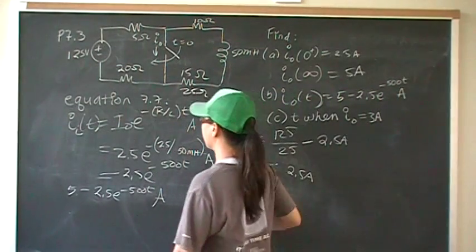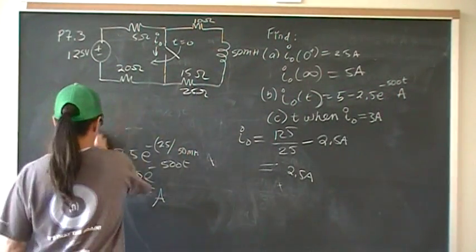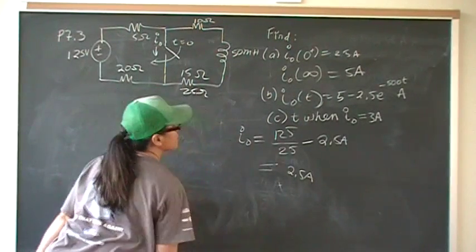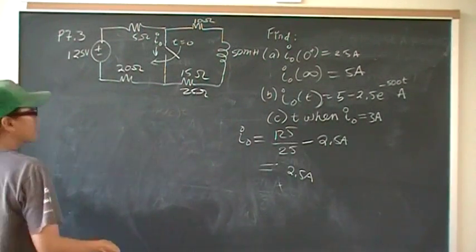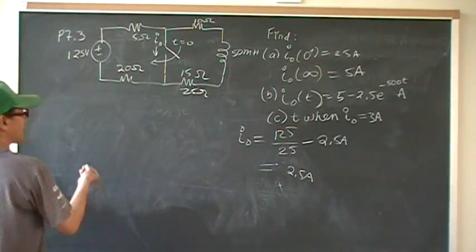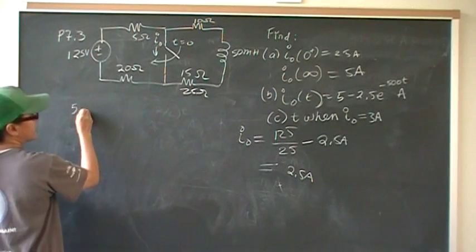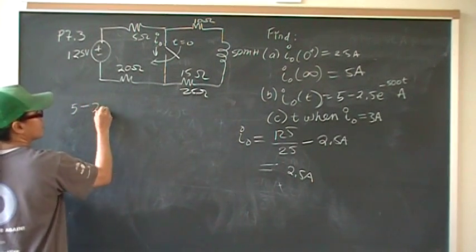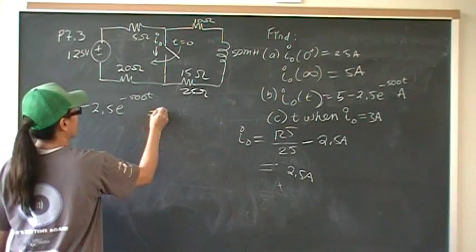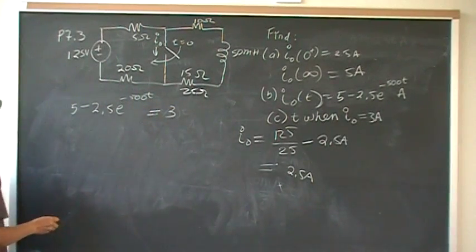For part C, we want to know when this current, I-naught, is equal to 3 amps. So we simply set the equation to 3. We want to find the time. So we have 5, minus 2.5 E to the negative 500 T. When is that equal to 3 amps?